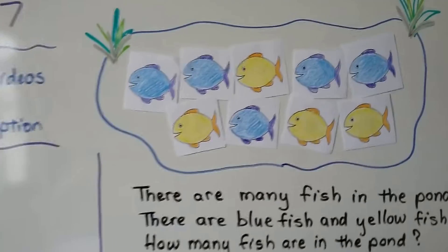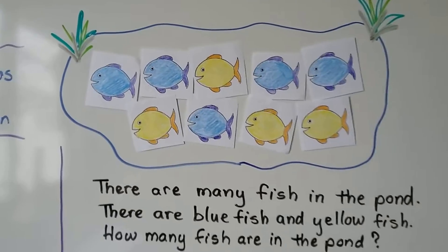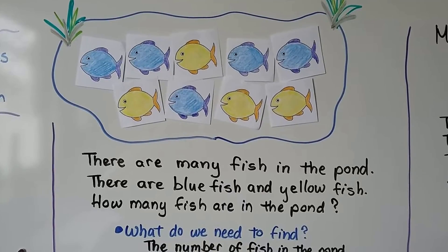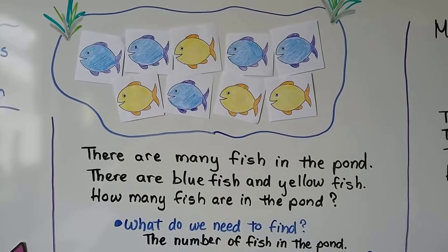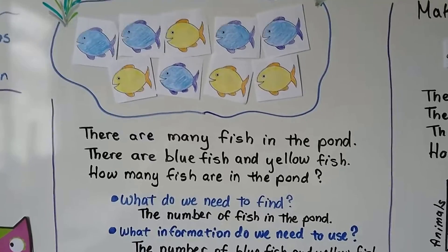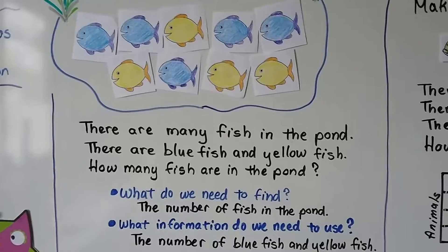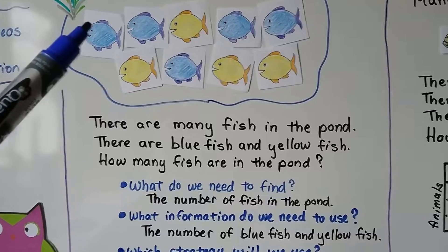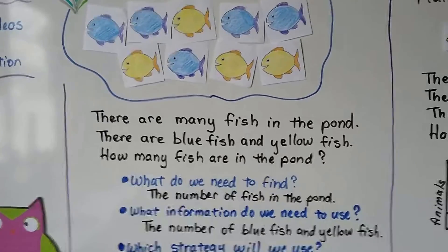So here we've got some fish in a pond. We've had them before. And there are many fish in the pond. There are blue fish and yellow fish. How many fish are in the pond? So what do we need to find? Well, we need to find the number of fish in the pond, don't we? And what information do we need to use? We need to use the number of blue fish and yellow fish.